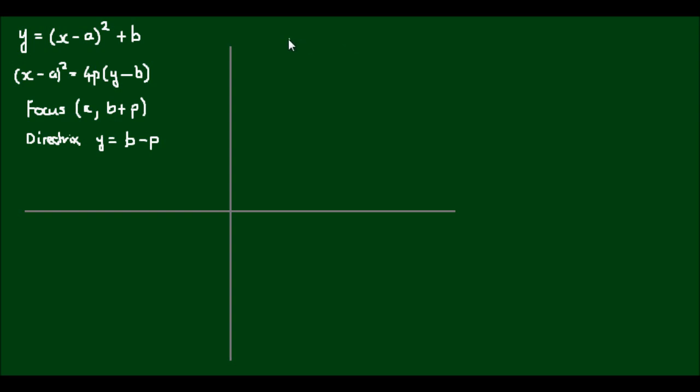So for a horizontal parabola, I can just swap the variables x and y. So instead of y equals (x - a)², I can say x equals (y - b)² plus a. And because I've swapped the variables x and y, I'm also going to swap the points of the vertex b and a as well.